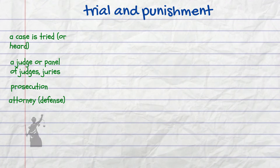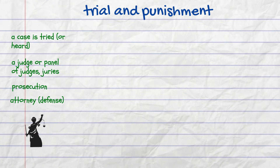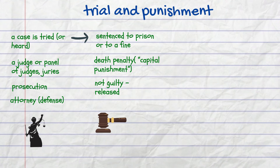There it is tried or heard by a judge or panel of judges, often together with juries. The prosecution is to prove that the accused, also called a defendant, is guilty, whereas it is an attorney's job, also known as defense, to prove the opposite — that the accused is innocent. It is up to the judges and the juries to make the final decision. If found guilty, the accused is sentenced to prison or to a fine. In some countries death penalty still exists, also known as capital punishment. If the accused is found not guilty, he or she is released.